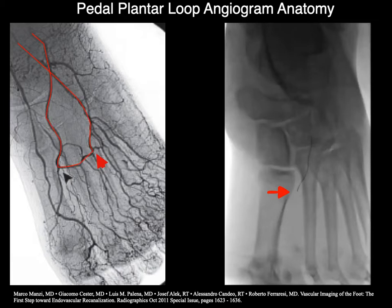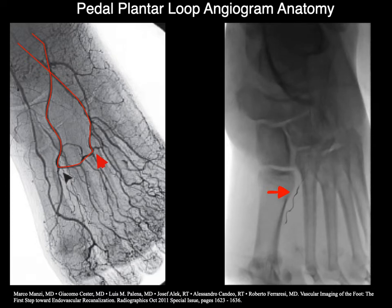For those of you who have never seen a real catheterization of the pedal plantar loop, I'm showing you a case here. It's a CLI patient. I have a 0.014 CTO catheter in the distal dorsalis pedis artery, using a 0.014 guide wire — in this case, Command 14, though you can use a Command 18 or Asahi Fielder guide wires. There's a whole host of catheters and guide wires that can be used. I want you to look at this very carefully: you can see where the red arrowhead is, there's a little prolapse or bulging into the deep perforating artery origin, between the base of the first and second metatarsal. That's where the first turn is.